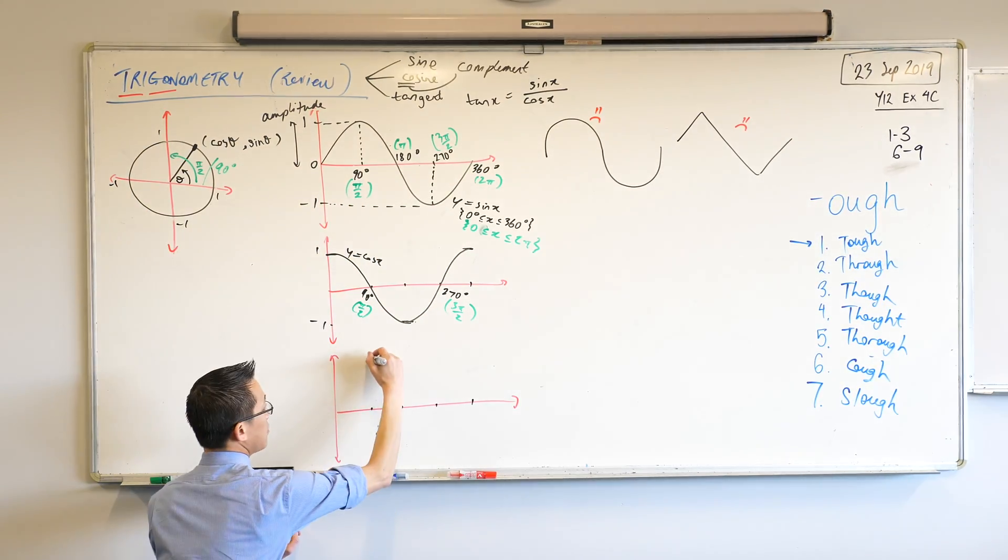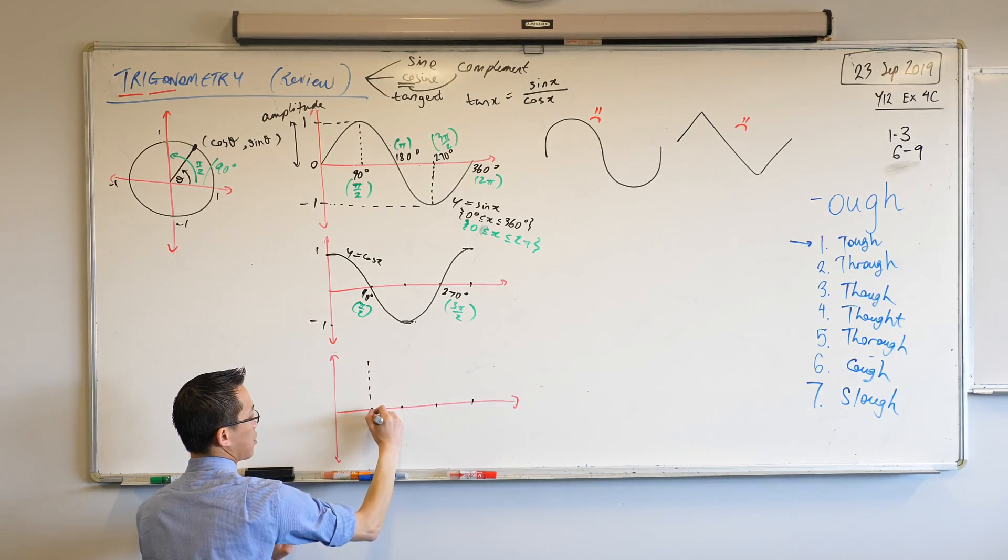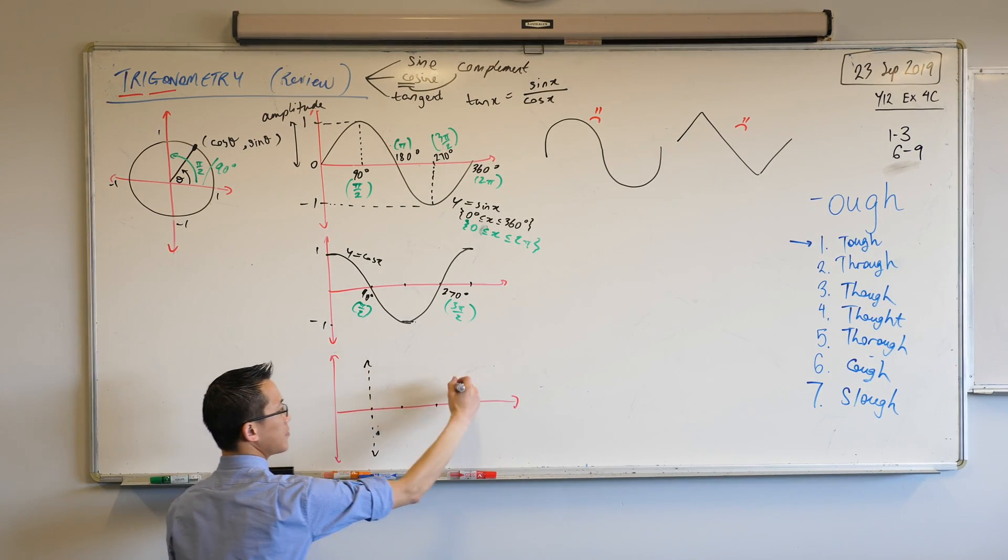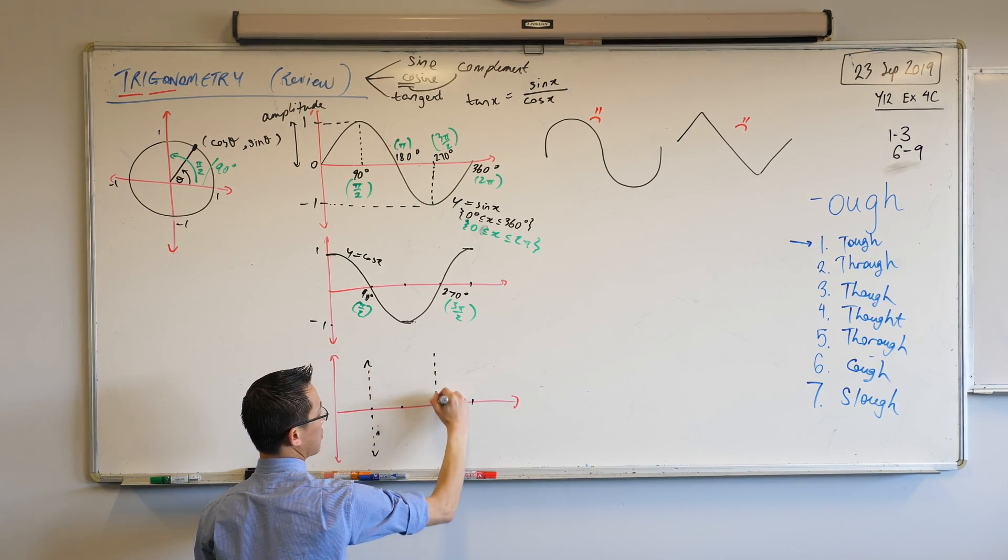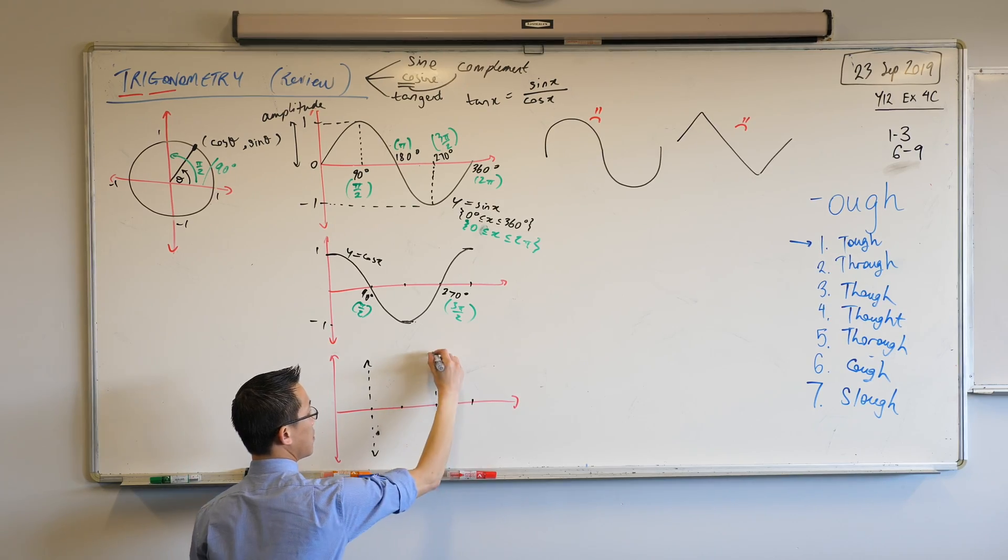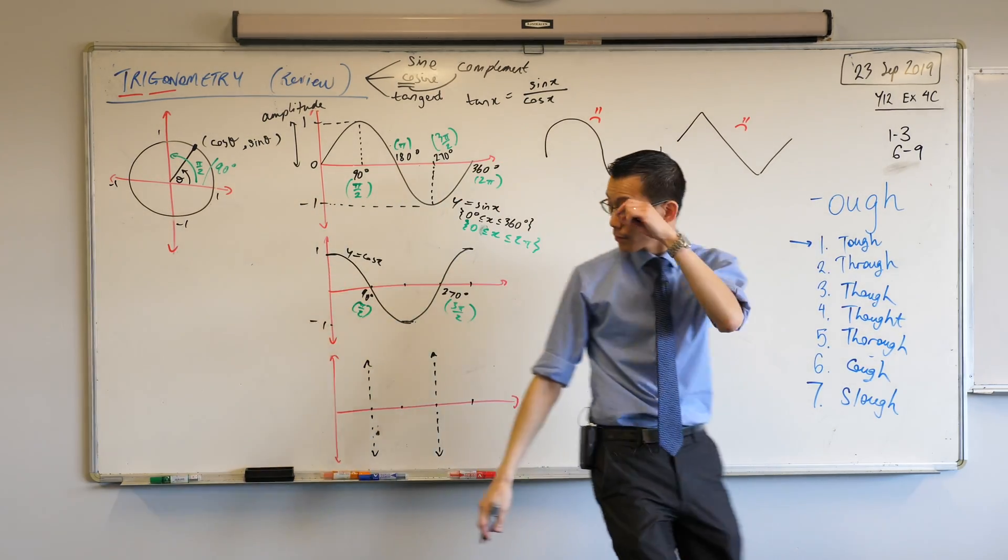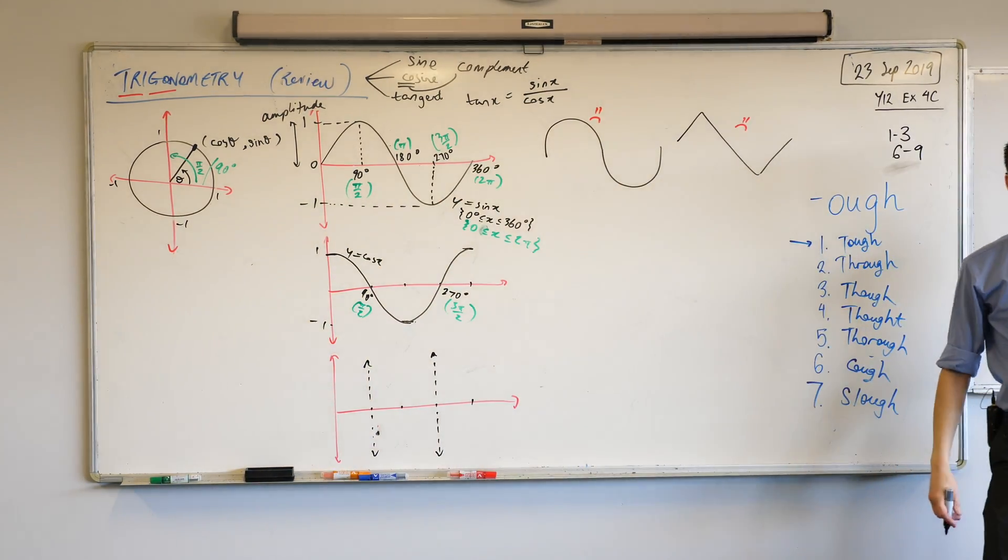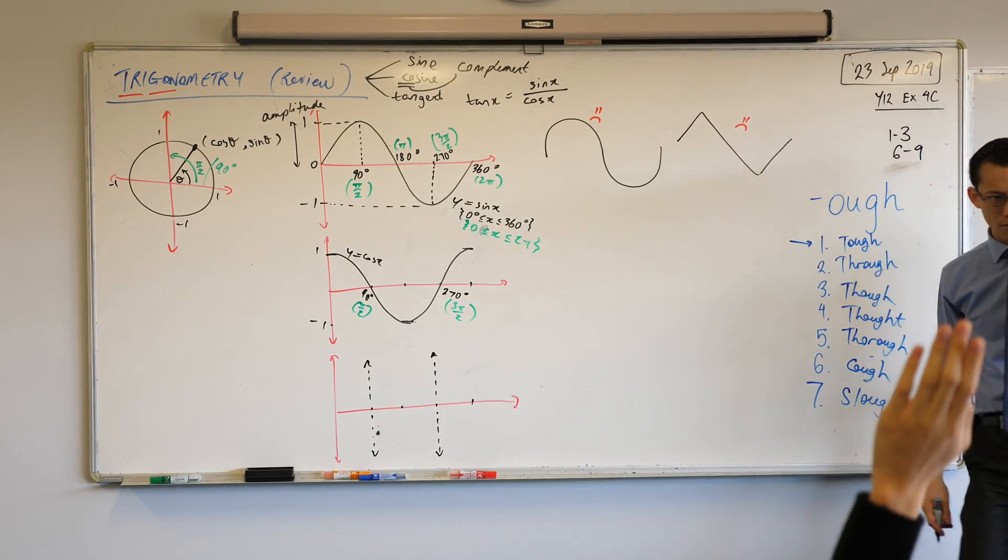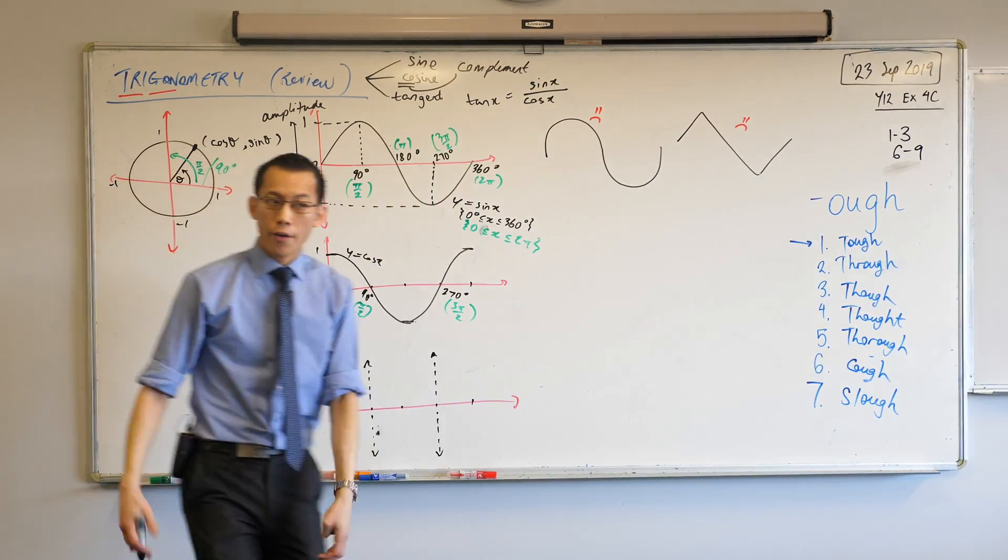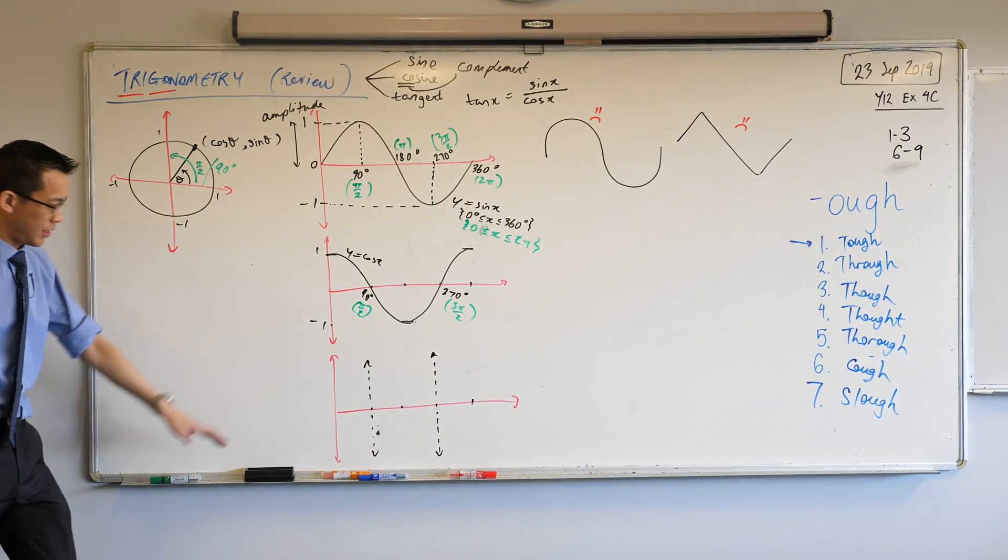So if you haven't already, go through and put in your asymptote at pi on 2 as well as at 3 pi on 2. Quick show of hands, who's drawn their tan graph? About a third of you, that's fine. For the rest of you, let's have a go at the rest of it.